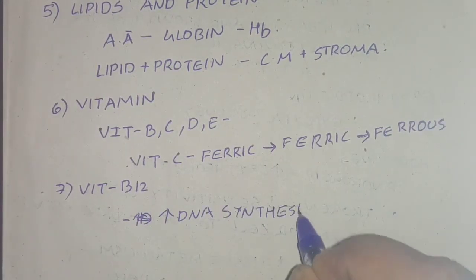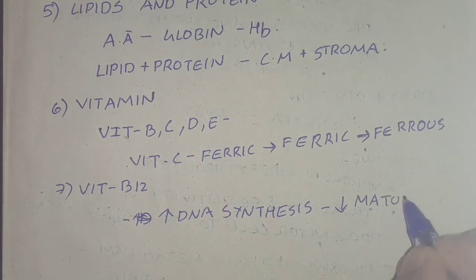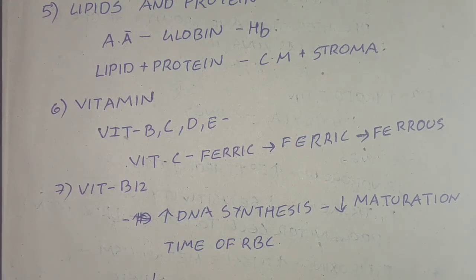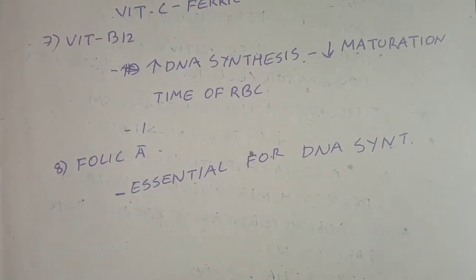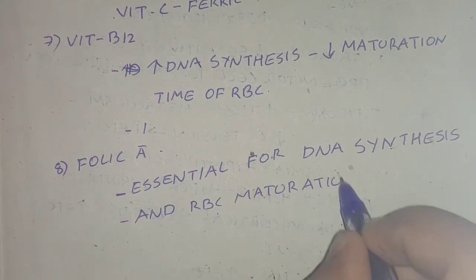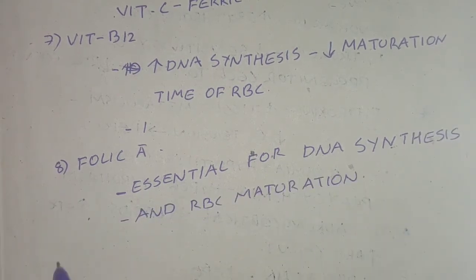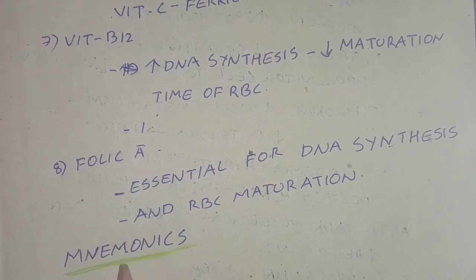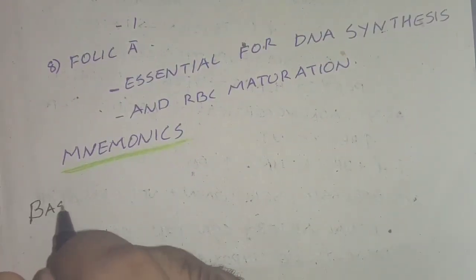The maturation factors include vitamin B12 and folic acid, which will be discussed in detail in coming videos. Vitamin B12 increases DNA synthesis and decreases the maturation time of RBCs. Folic acid is essential for DNA synthesis and RBC maturation.